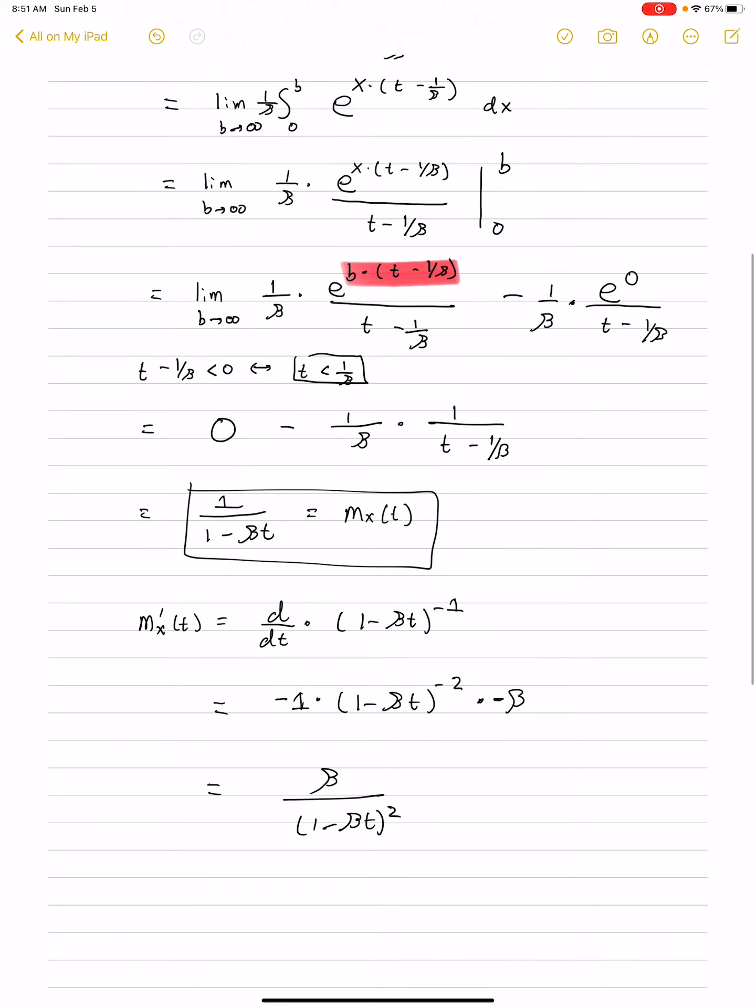We've also proved that the moment generating function of an exponential distribution is 1 over 1 minus beta t. So, we've learned two new facts. And thank you very much for joining me.